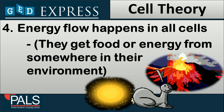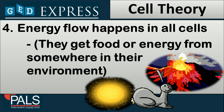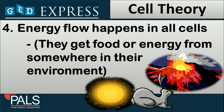Another additional statement under the cell theory is that energy flow happens in all cells. That means they get food or energy from somewhere in their environment. This can be categorized as autotrophic organisms, which rely directly from sunlight, or heterotrophic organisms, which rely on other living organisms in order to obtain energy.